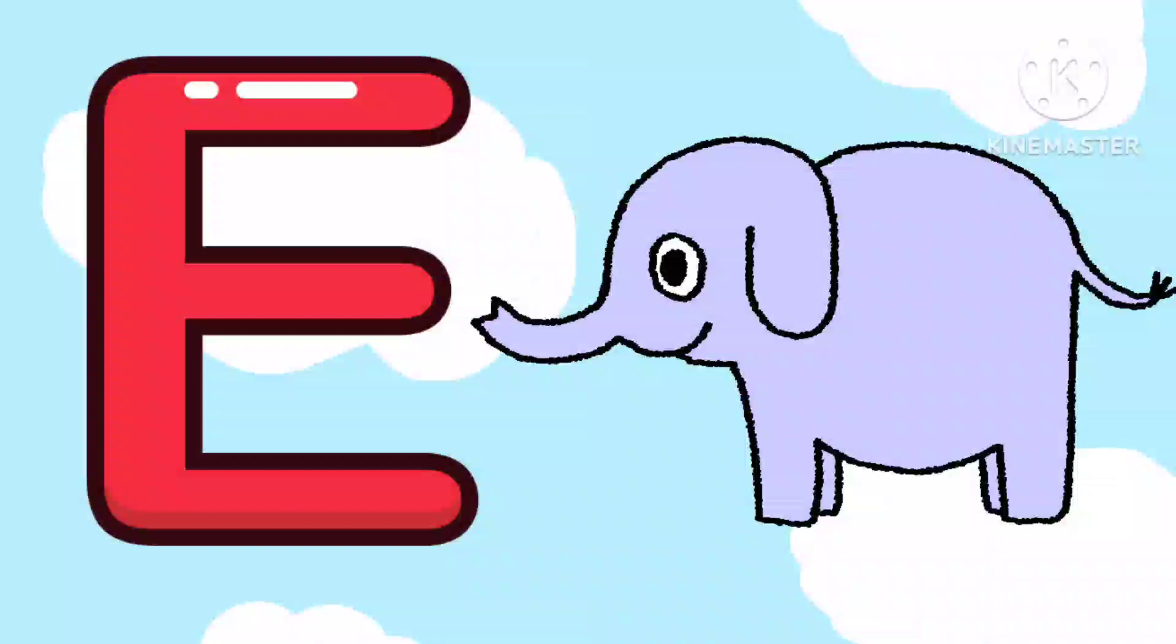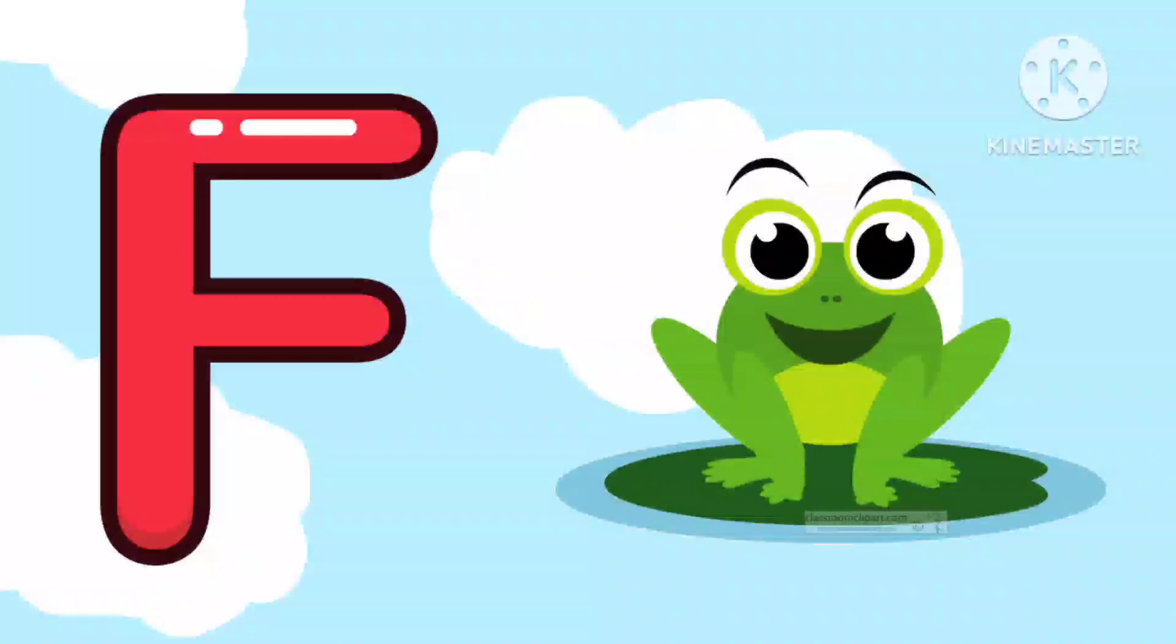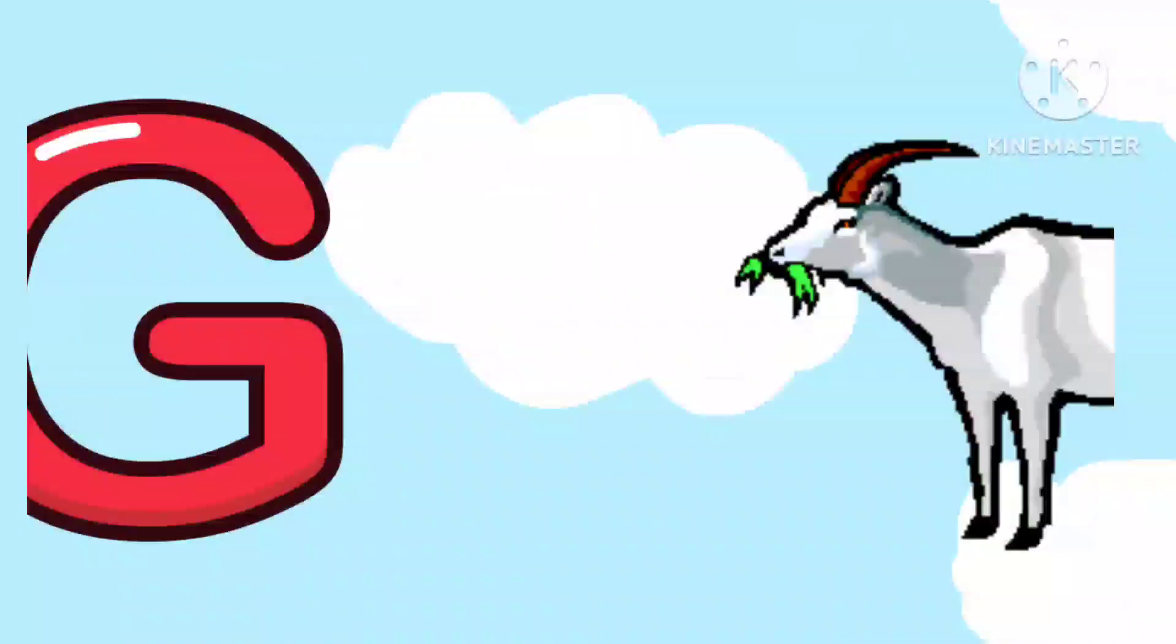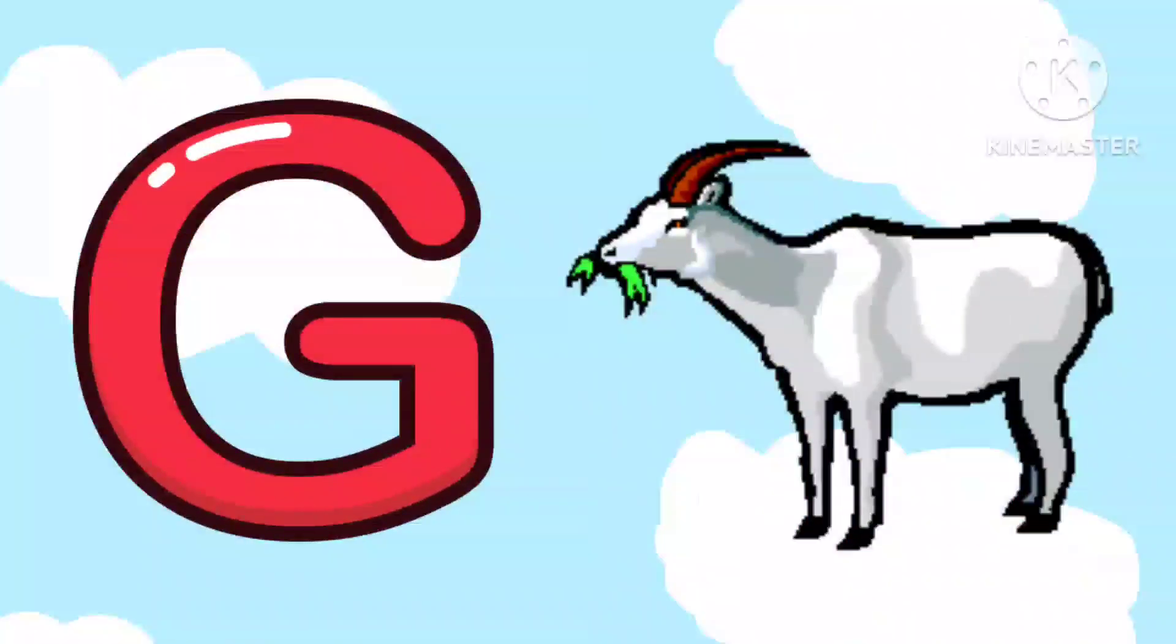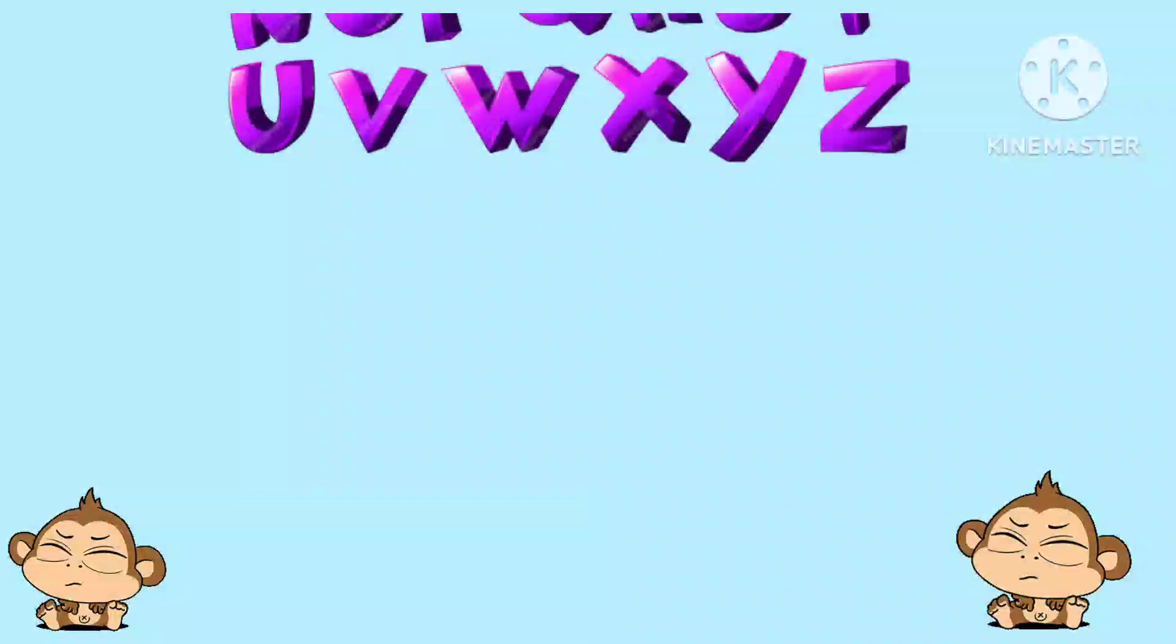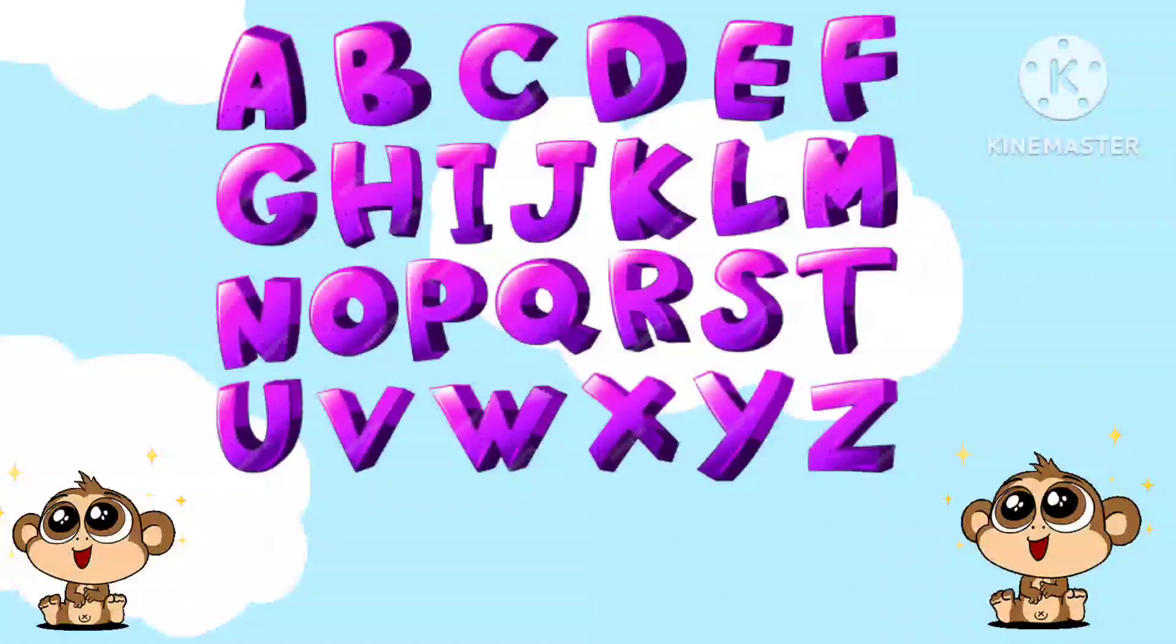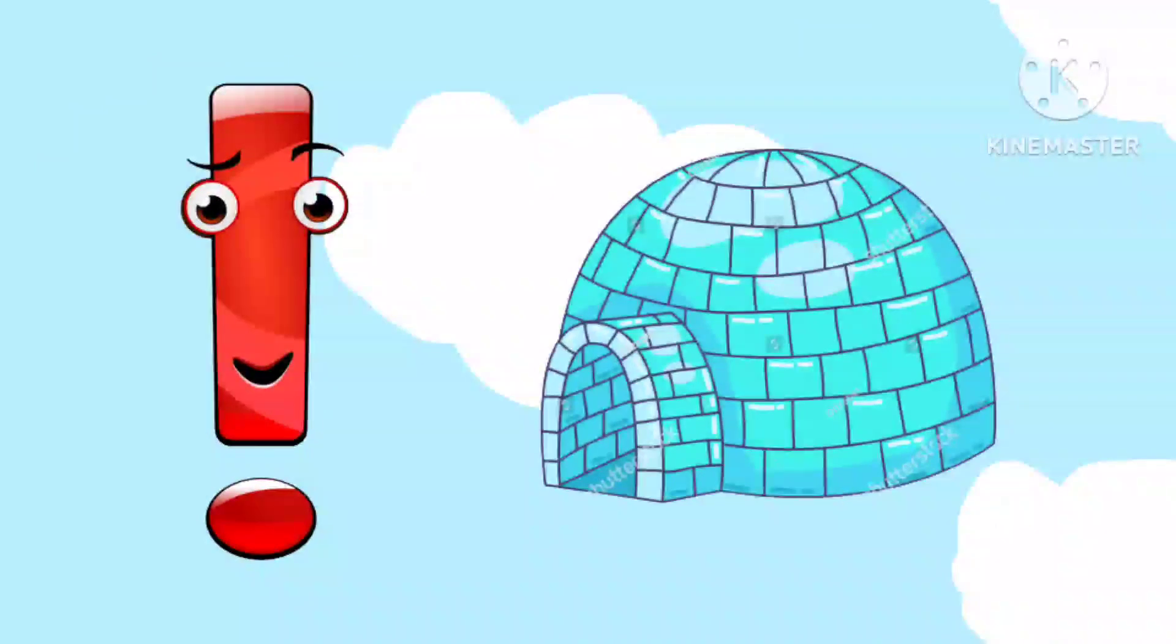E is for Elephant, E, E, Elephant. F is for Frog, F, F, Frog. G is for Goat, G, G, Goat. H is for Hand, H, H, Hand.